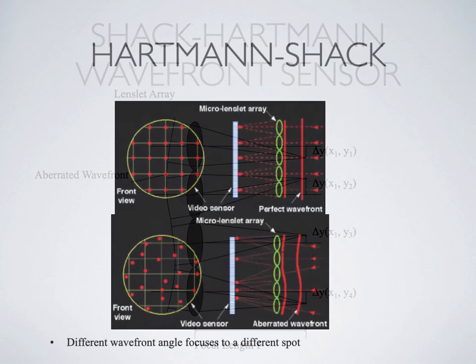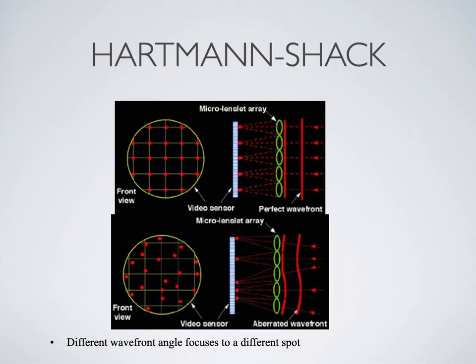The top image shows a theoretically perfect wavefront: all photons come out in a single plane, all focused onto equally spaced points on the CCD. If the optics of the eye are not perfect, the dots wind up in different places, as shown in the bottom image.